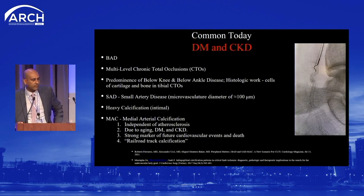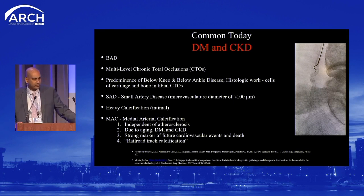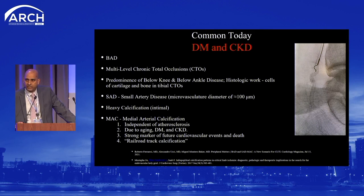Because of the explosion of diabetes and CKD, we're seeing bad or big artery disease — multi-level CTOs, a predominance of below-knee and below-ankle disease. There's histologic work showing cells of cartilage and bone in tibial CTOs, which makes revascularization very difficult. We're also seeing SAD or small artery disease, where the microvasculature less than about 100 micrometers in size is being destroyed, sometimes by diabetes alone.